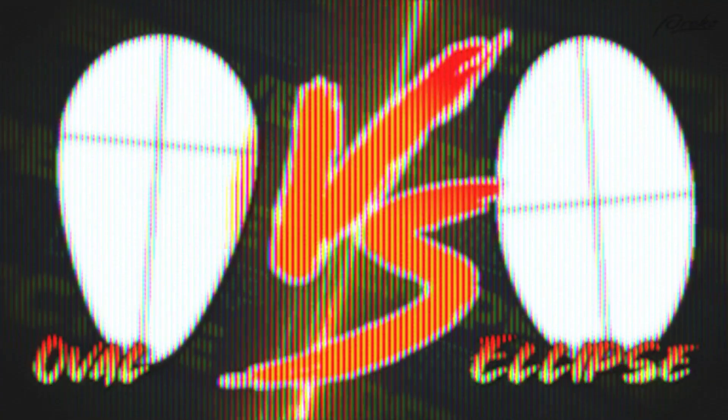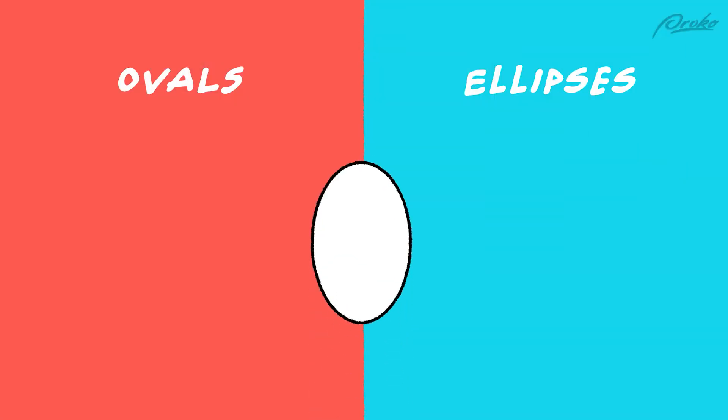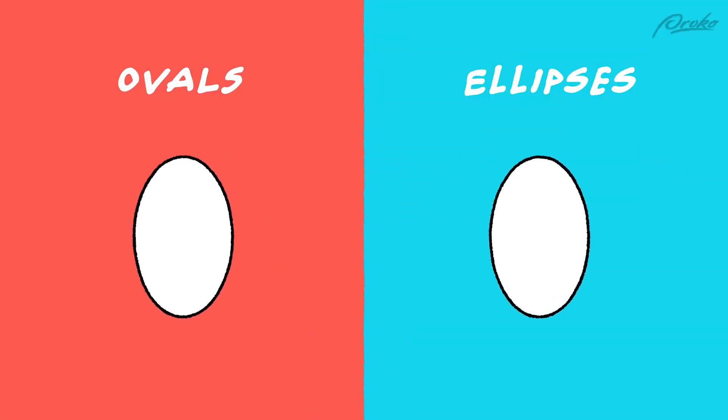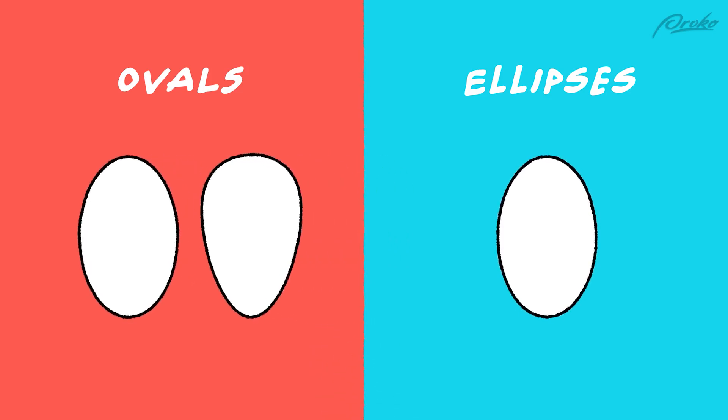Or is it an ellipse? A lot of people seem to be confused about the difference between the two. So let's get that out of the way. All ellipses are ovals, but not all ovals are ellipses.